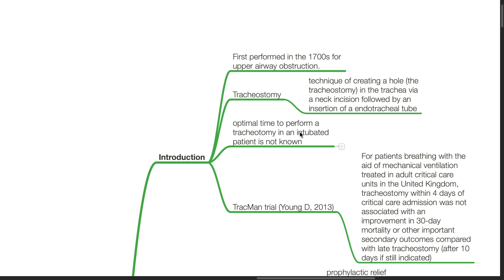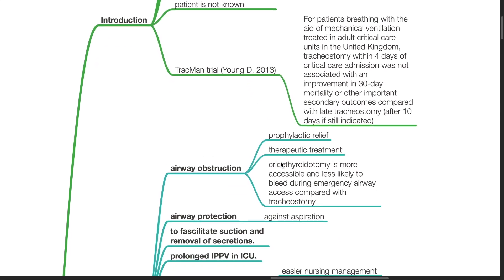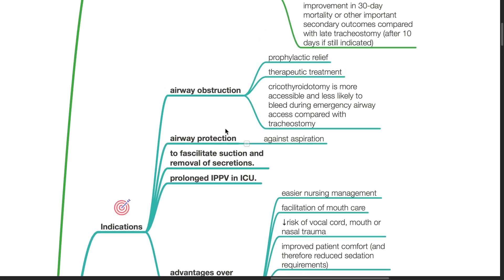The optimal time to perform a tracheostomy in an intubated patient is not known. Indications of tracheostomy include airway obstruction for prophylactic relief or therapeutic treatment. Cricothyroidotomy is more accessible and less likely to bleed during emergency airway access compared with tracheostomy. Airway protection against aspiration, to facilitate suction and removal of secretions, and prolonged ventilation in ICU are also indications.